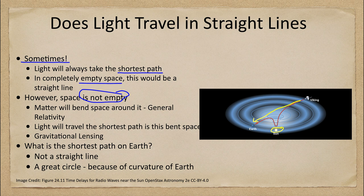So when we have things that are bent like that, the light will then travel this curved path, and that's what we see in the image here — the light will travel from the Viking craft, go down closer to the sun, and then back up again, still taking the shortest possible path within our space.